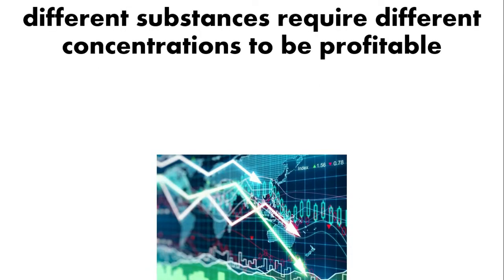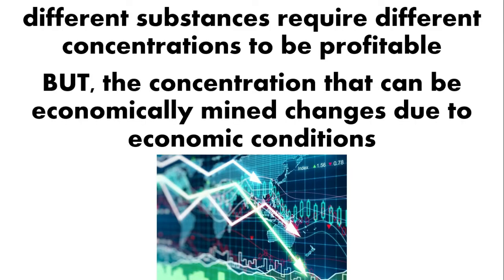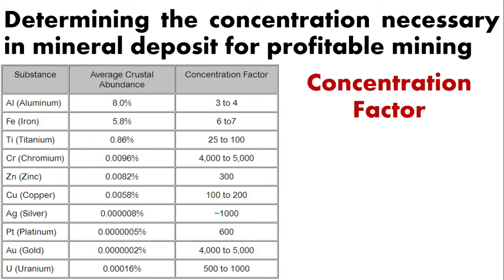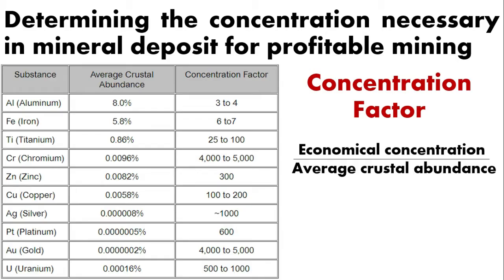Different substances require different concentrations to be profitable, but the concentration that can be economically mined changes due to economic conditions. So we can determine the concentration necessary in a mineral deposit for profitable mining. This is what we call the concentration factor. To get the concentration factor, we need to divide economical concentration over the average crustal abundance.